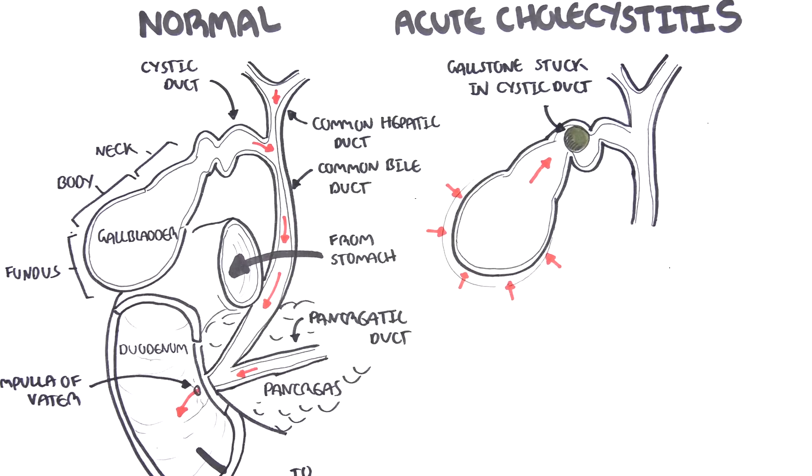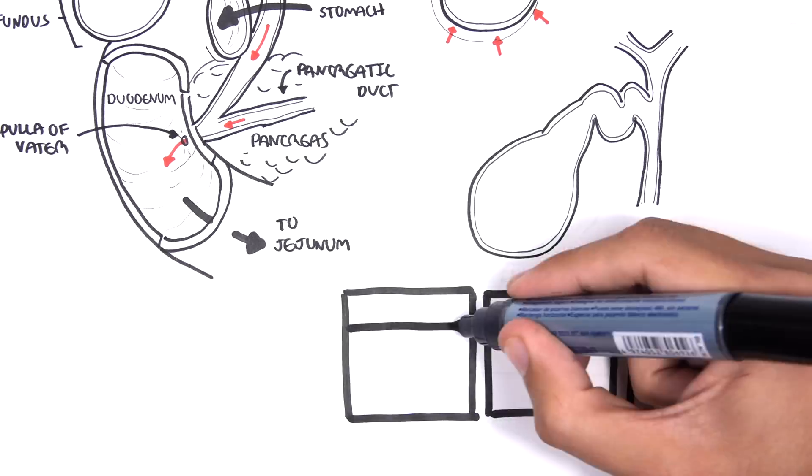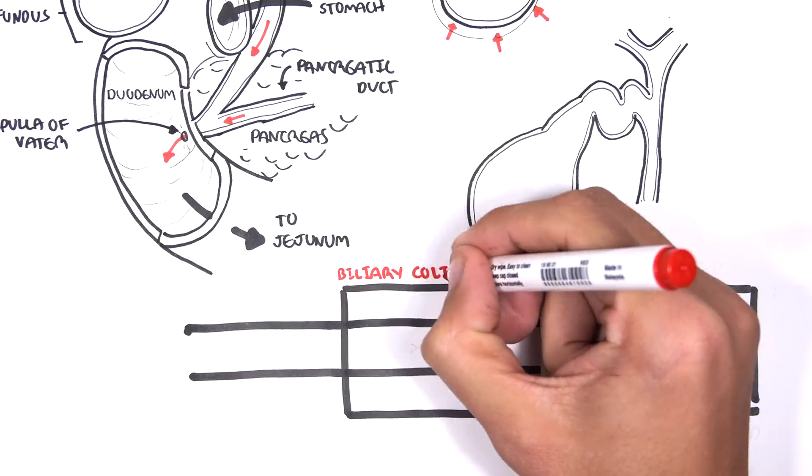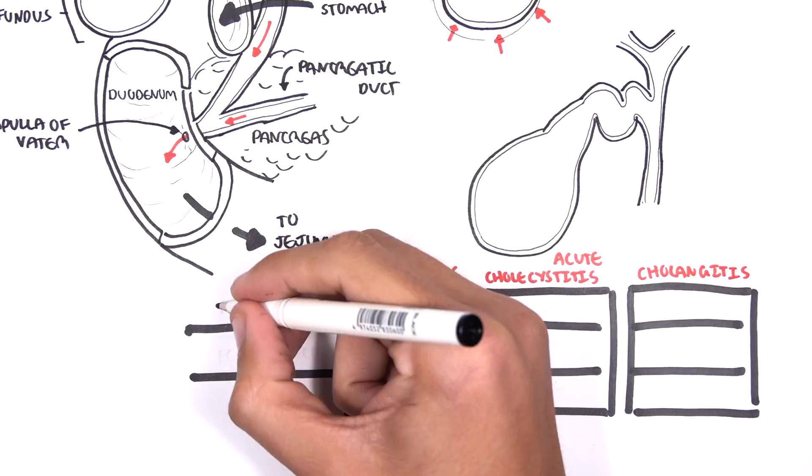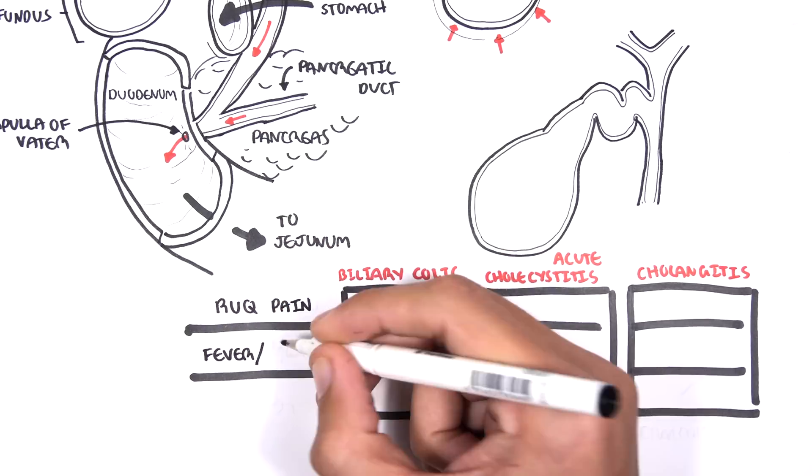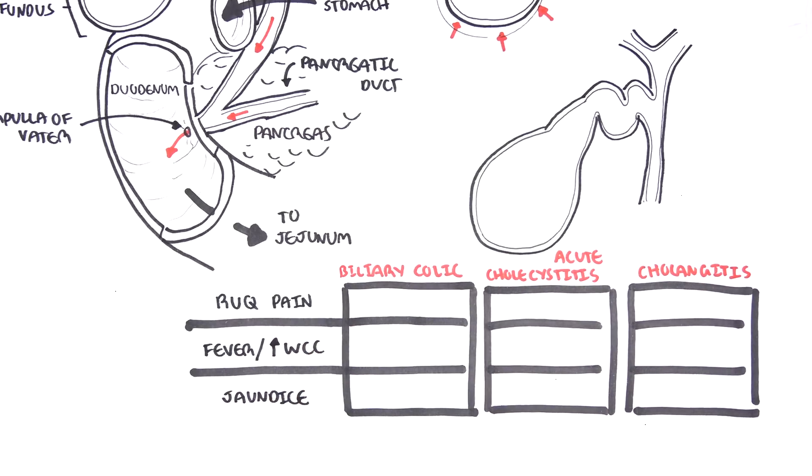Acute cholecystitis shares similar features to two other conditions called biliary colic and cholangitis. But these three conditions do differ. We won't talk about them now, but they differ in the pain, having fever or increased white cell count, and finally jaundice, which is yellowing of the skin.